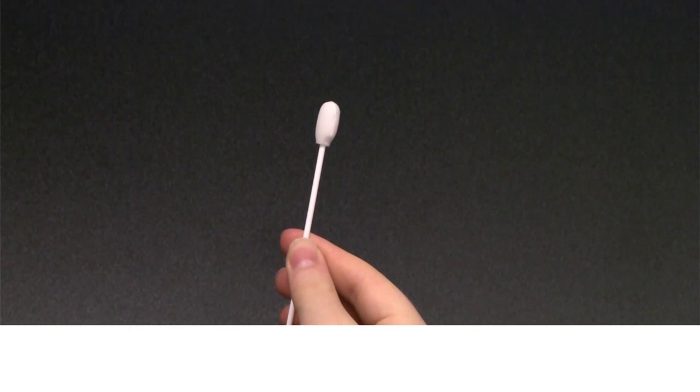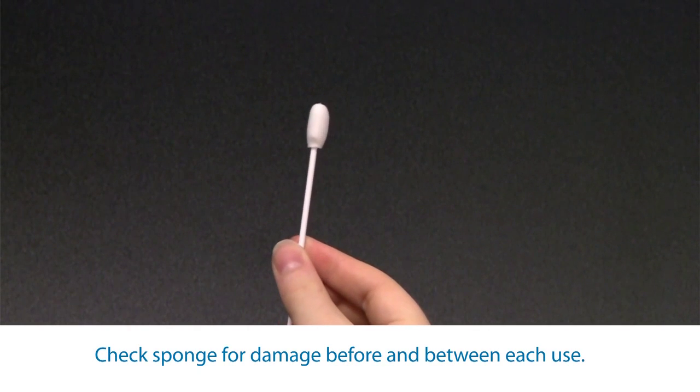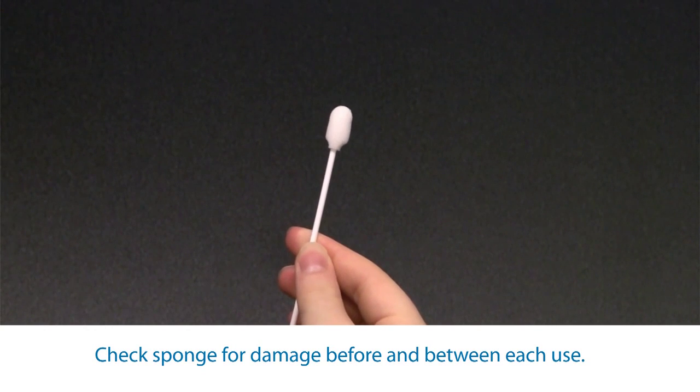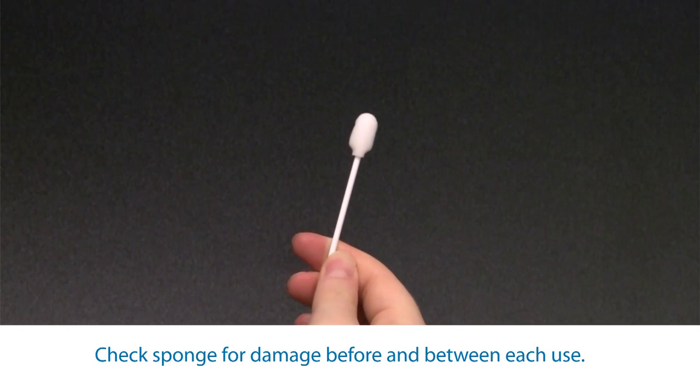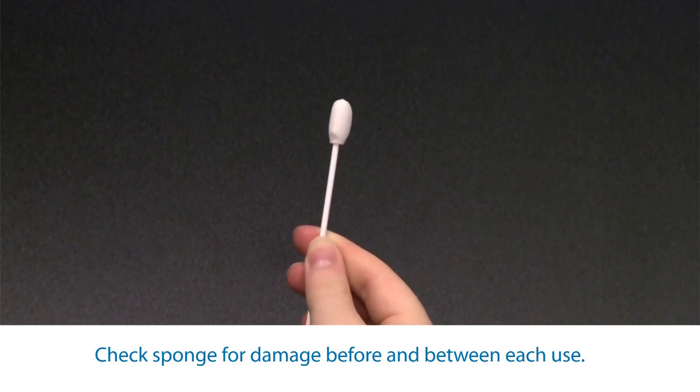Check the sponge for damage before and between each collection. Use the second sponge provided as backup if the first sponge shows any signs of wear or tear, but do not substitute with any other sponge or swabs.